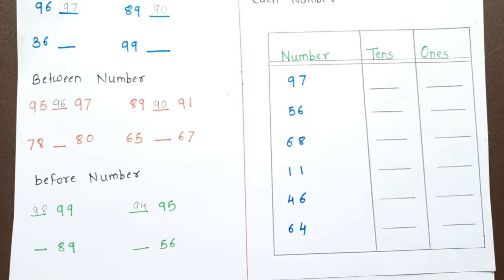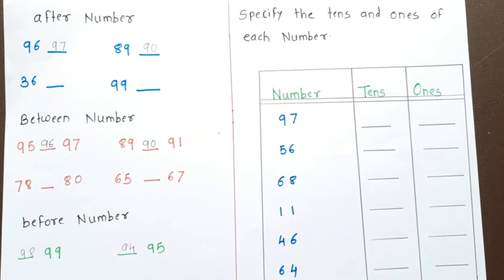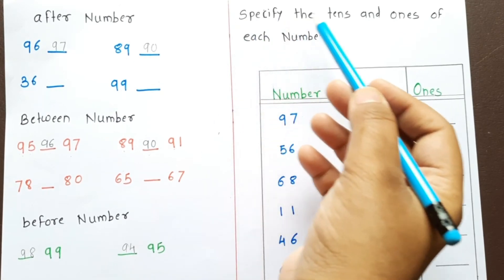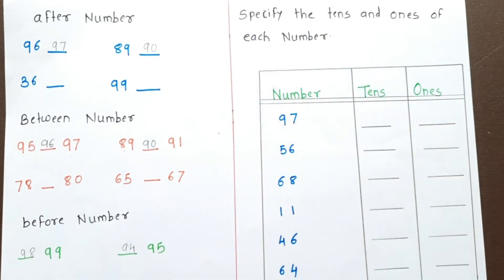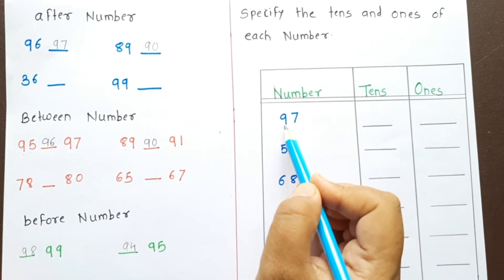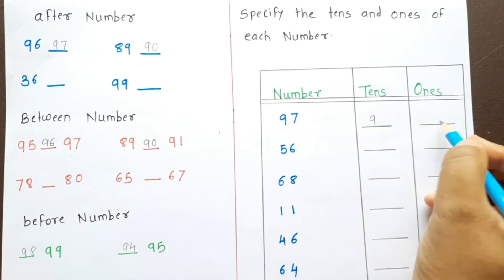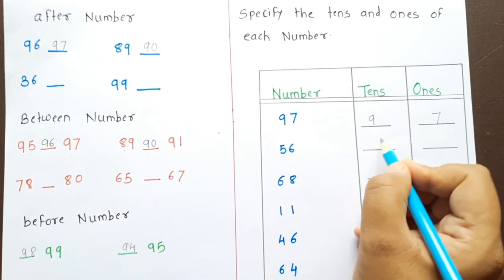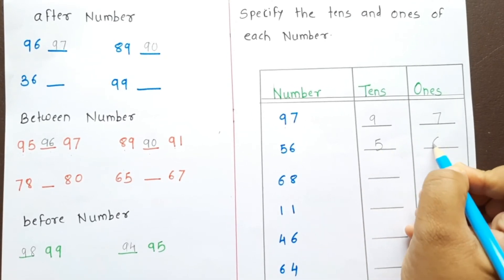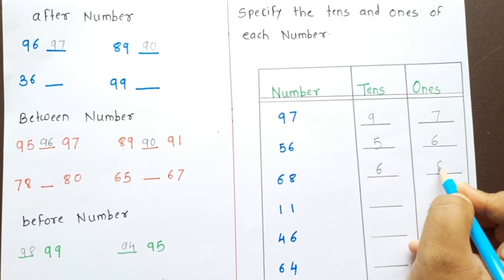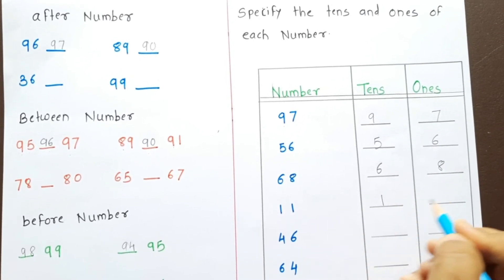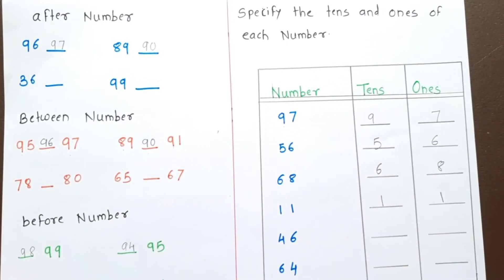Now we will specify the tens and ones of each number. 97 — 9 tens, 7 ones. 56 — 5 tens, 6 ones. 68 — 6 tens, 8 ones. 11 — 1 ten, 1 one.